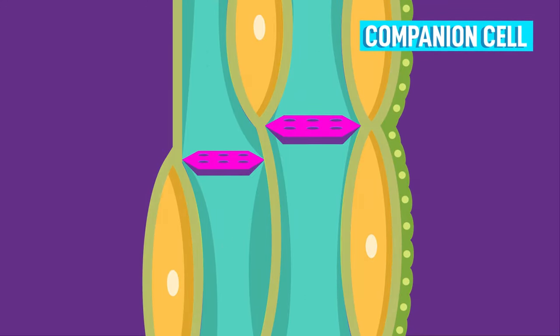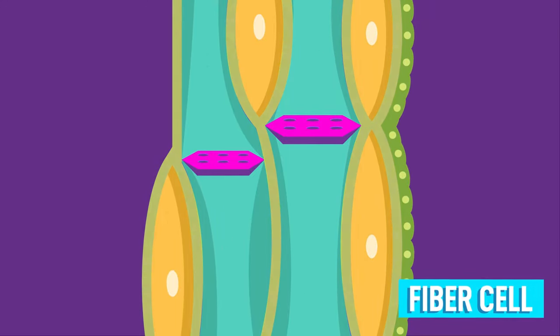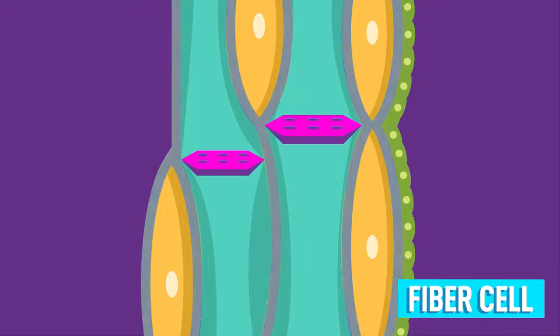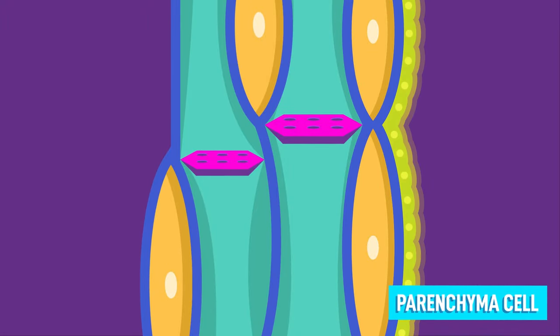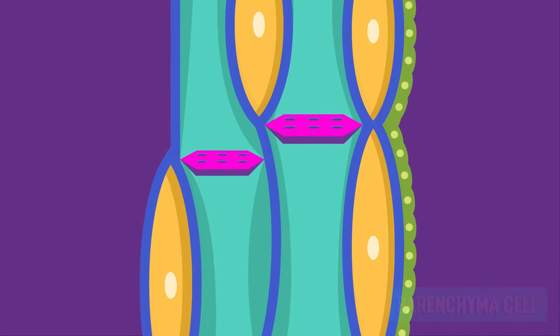Just like in the xylem, the fibre cell helps to give structural support, and the parenchyma stores the food and other substances. In phloem, the fibre cells are the only type of cell that is dead.